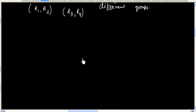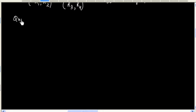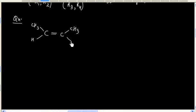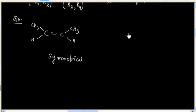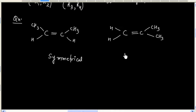For example, if I ask you what kind of alkene this is, this is an example of symmetrical alkene. And what about this alkene? This is an example of unsymmetrical alkene.